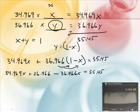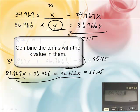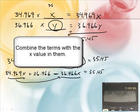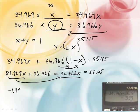Now, my math mind is going, I've got x here and I've got x here. So, they need to go together. Yeah, and this is a negative. So, we're going to, if you subtract these two numbers, that will give you my x term. What do you get? 34.969 minus 36.966. 966. That gives us negative 1.997. X.